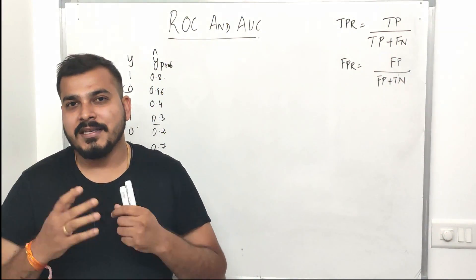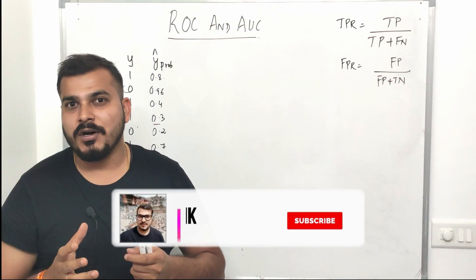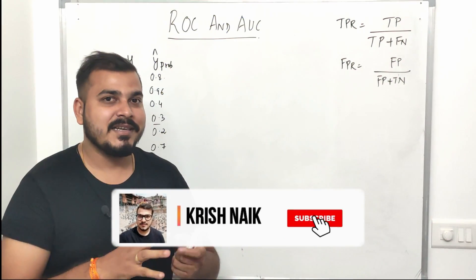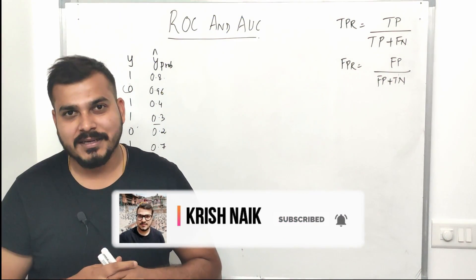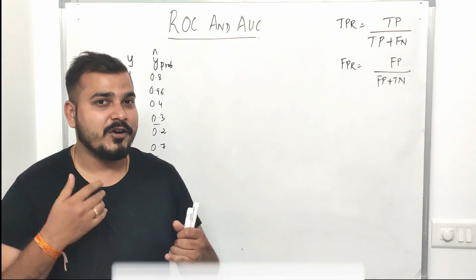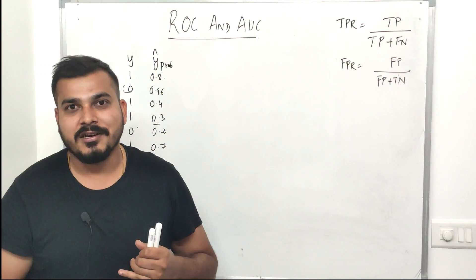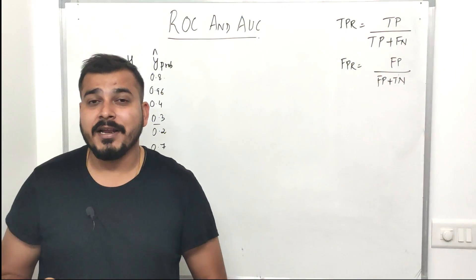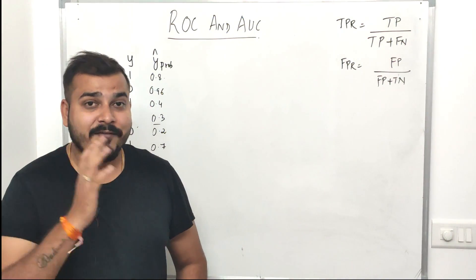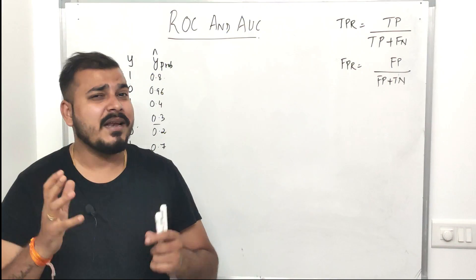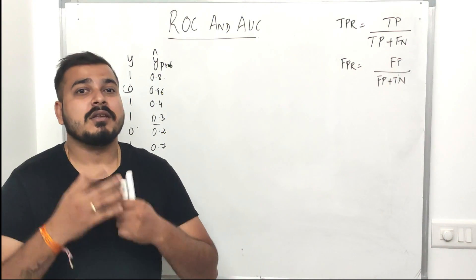In my previous video about performance metrics, I've already explained confusion matrix, recall, precision, true positive rate, false positive rate, apart from that F1 score, F-beta score and many more things.